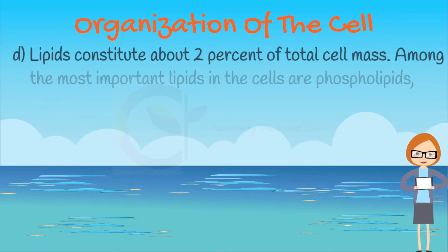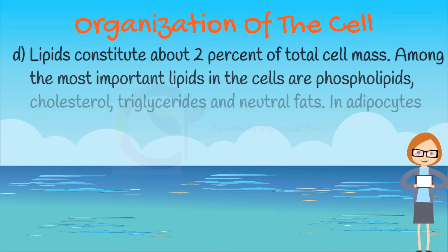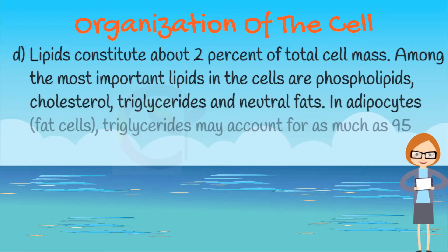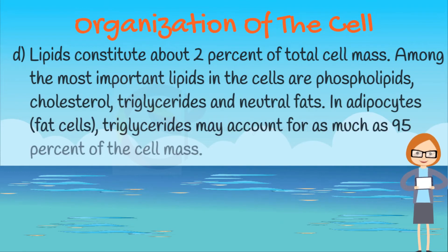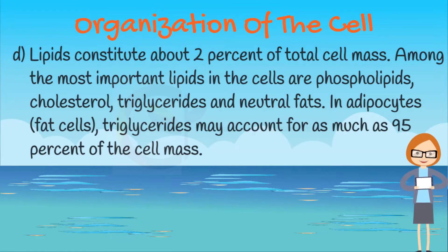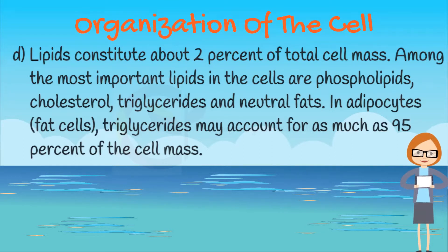Lipids constitute about 2% of total cell mass. Among the most important lipids in the cells are phospholipids, cholesterol, triglycerides, and neutral fats. In adipocytes, which are fat cells, triglycerides may account for as much as 95% of the cell mass.